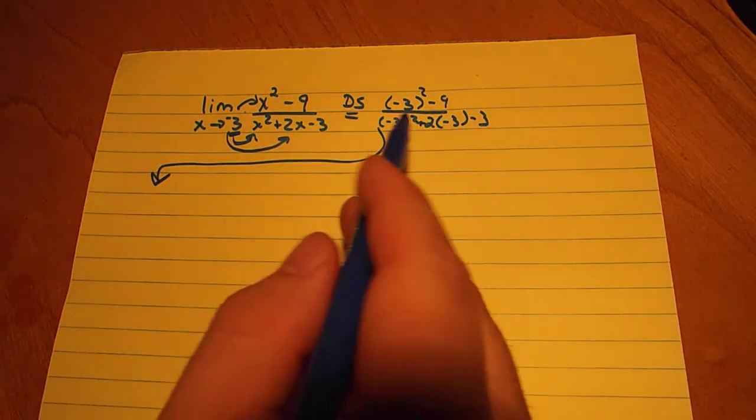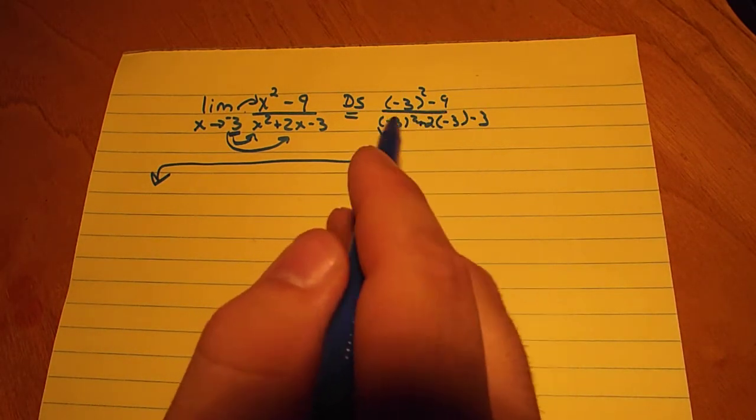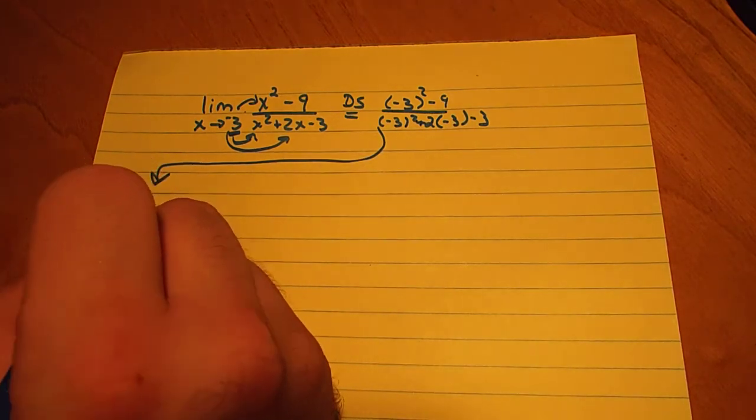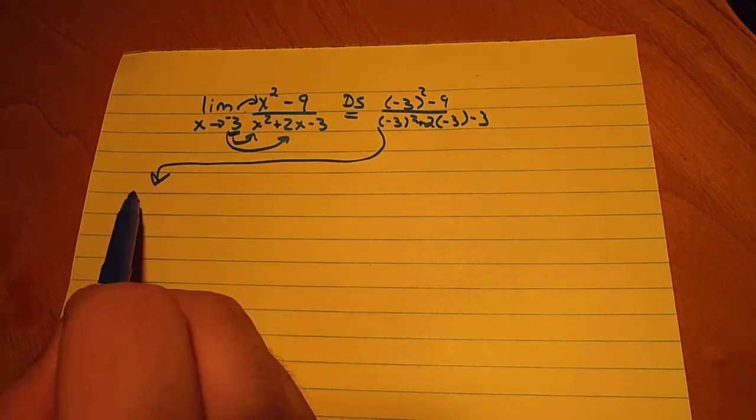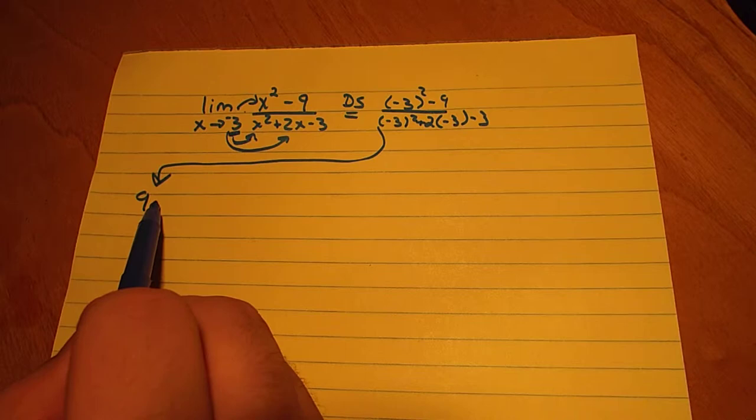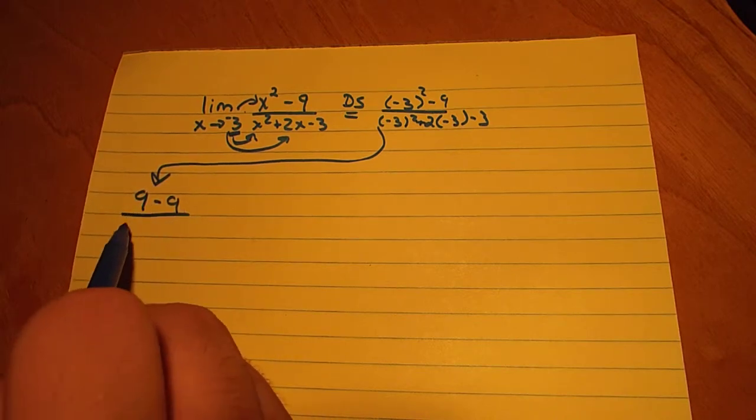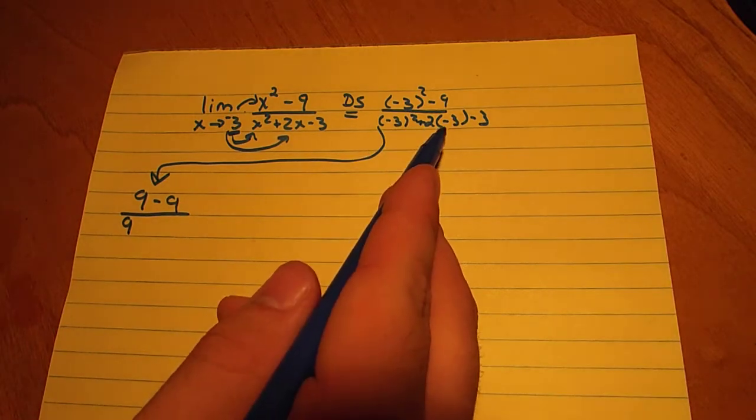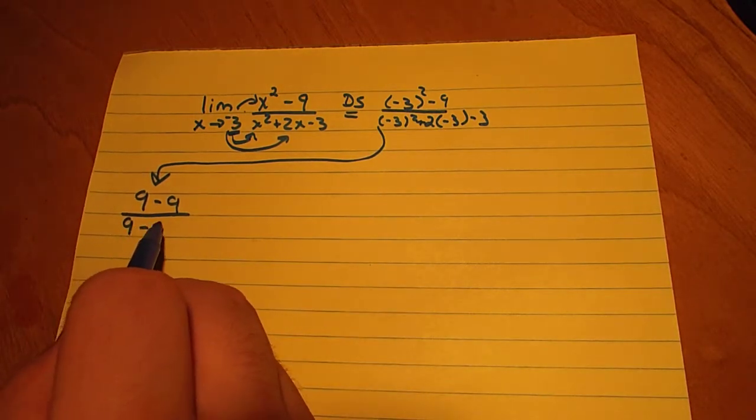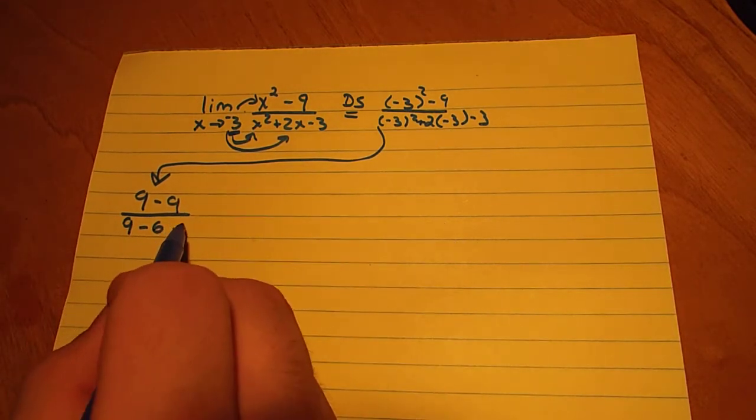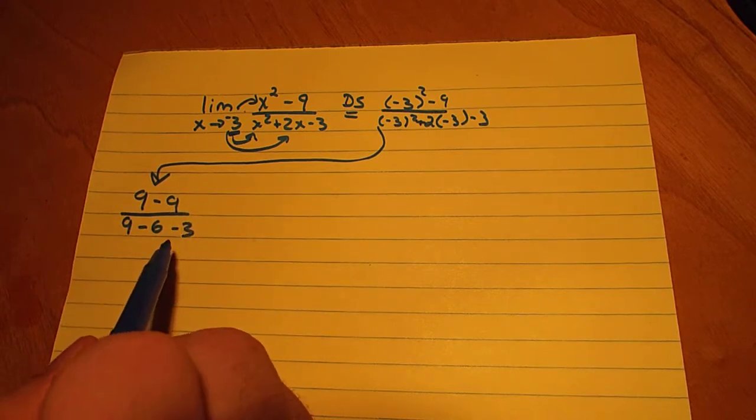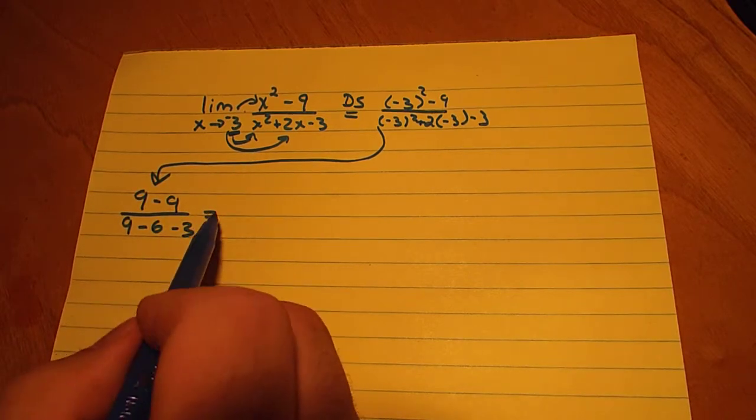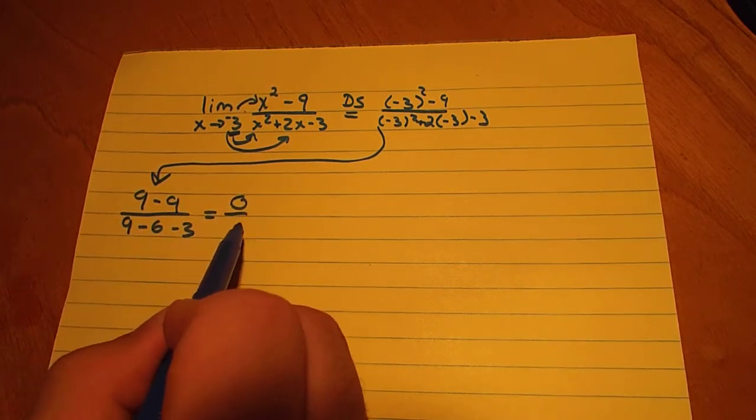When we expand this out and reduce it all, we'll expand it first so we end up with 9 minus 9 over negative 3 squared is 9, negative 3 times 2 is negative 6, so we'll subtract 6 minus 3. When we reduce this down, we end up with 0 over 0.